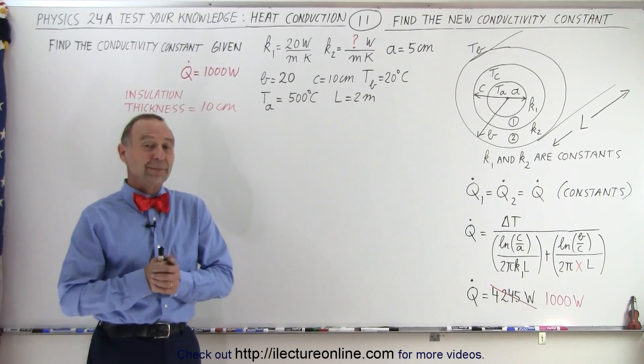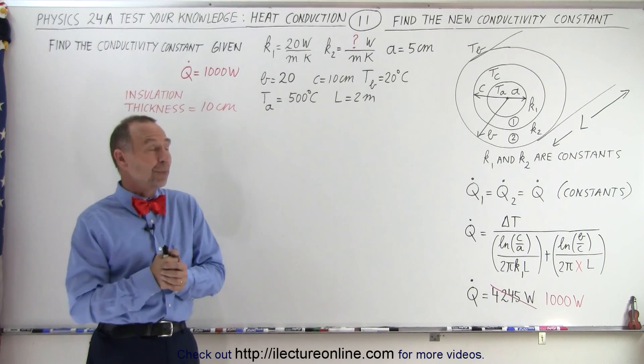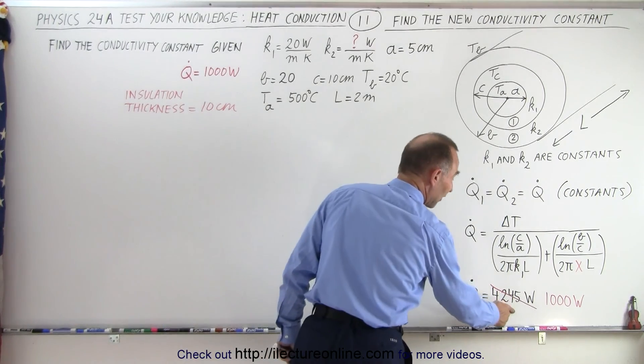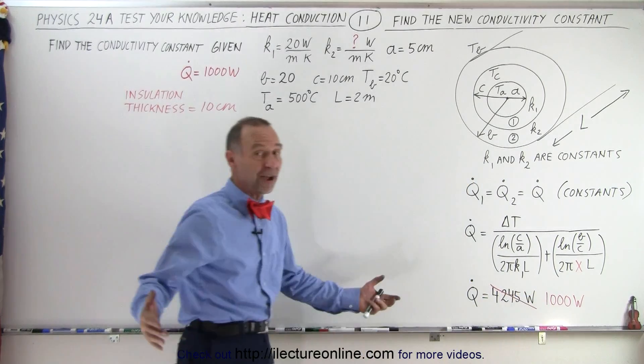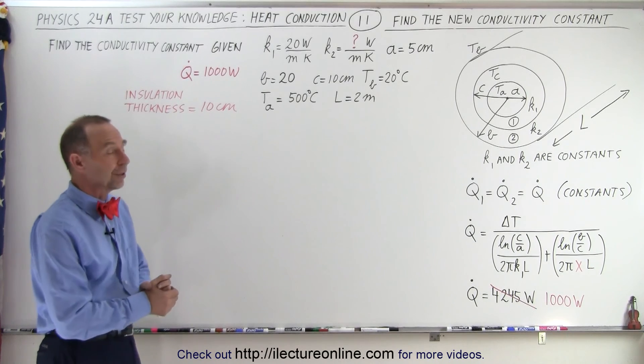Welcome to Electronline. In the previous video we calculated how thick the insulation needed to be to slow down the heat flow from 4245 watts down to a thousand watts and we found that the insulation thickness was quite big 1.9 meters or 190 centimeters.